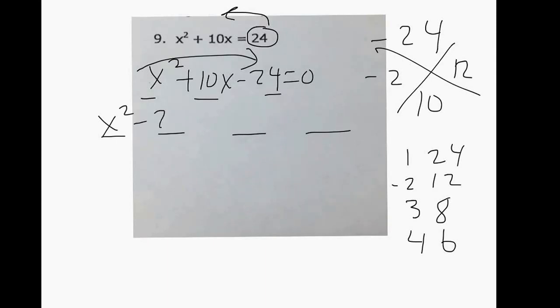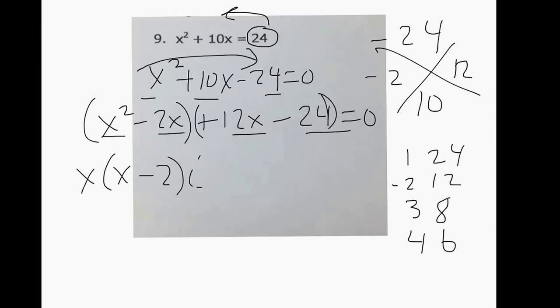x² - 2x + 12x - 24 = 0, we group. Those have an x in common so we pull that out and it's x - 2, so we know we're going to get an x - 2 over here. 12 and 24 have a 12 in common so it's x - 2 and x + 12.